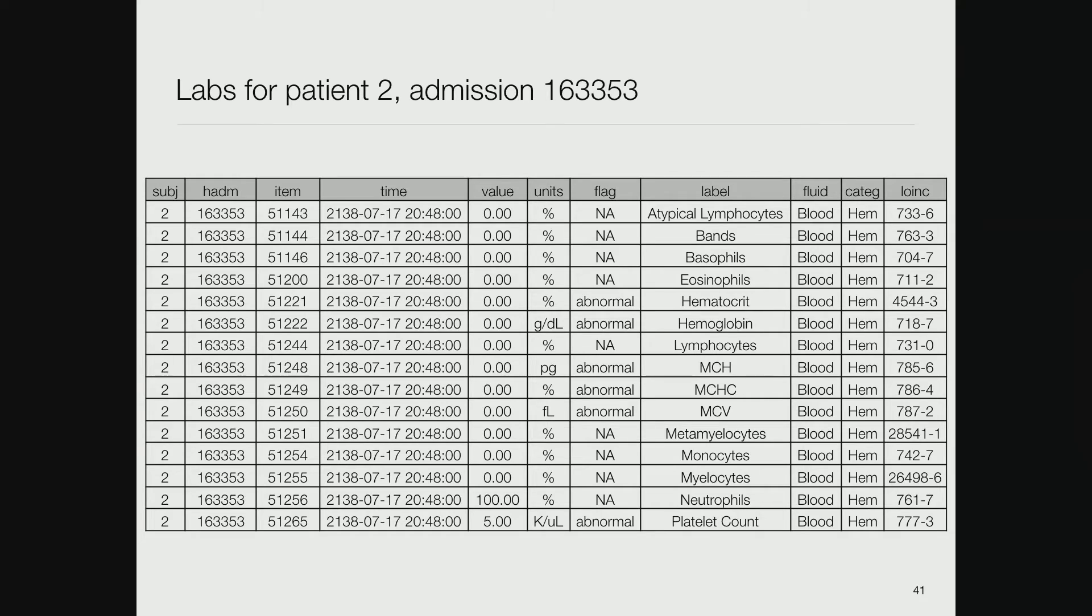For example, patient number two in the database. On July 17th 2138 - this is part of de-identification to make it difficult to figure out who the patient is - this person got a blood test and reported atypical lymphocytes.